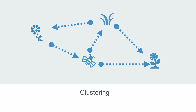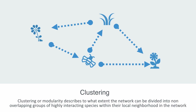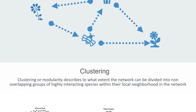Previous network analysis studies have revealed that ecological networks exhibit the important characteristic of clustering, found in many different networks. Clustering, or modularity, describes to what extent the network can be divided into non-overlapping groups of highly interacting species within their local neighborhood in the network. A module or cluster is a set of species that have a disproportionate number of connections with their own module as opposed to connecting to other modules.